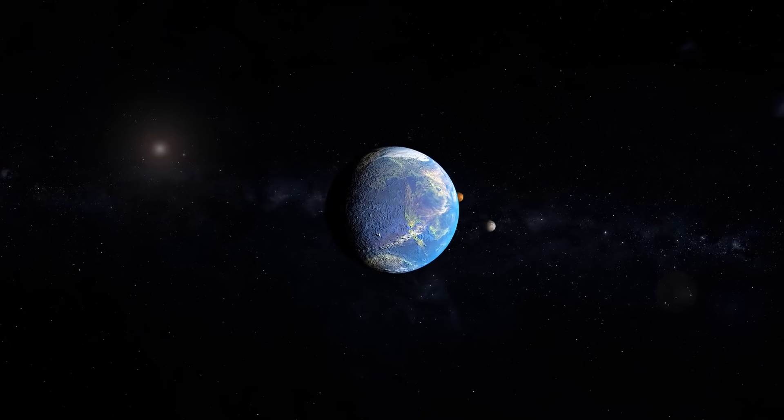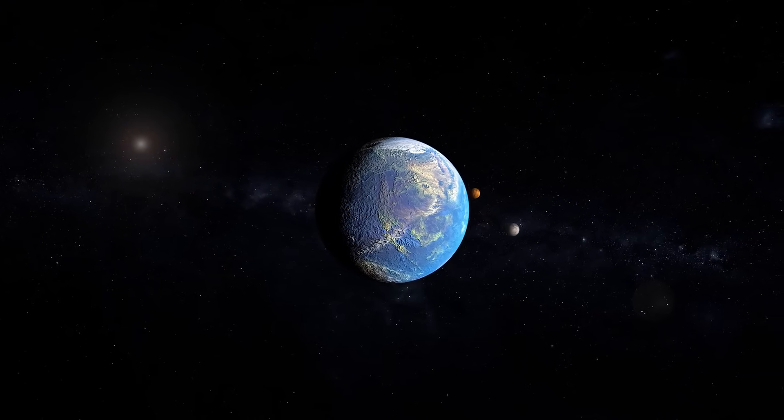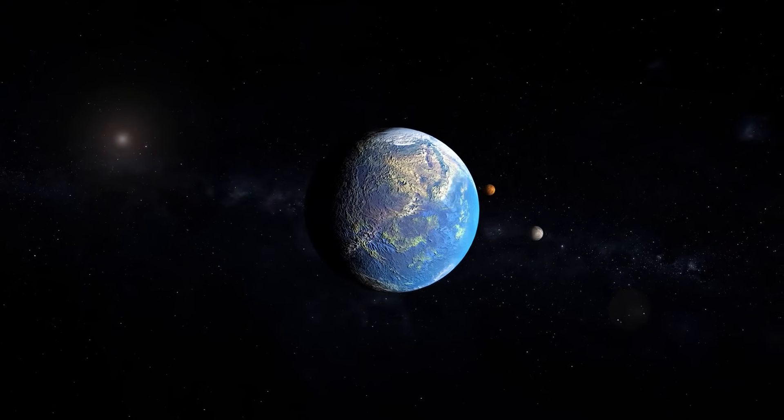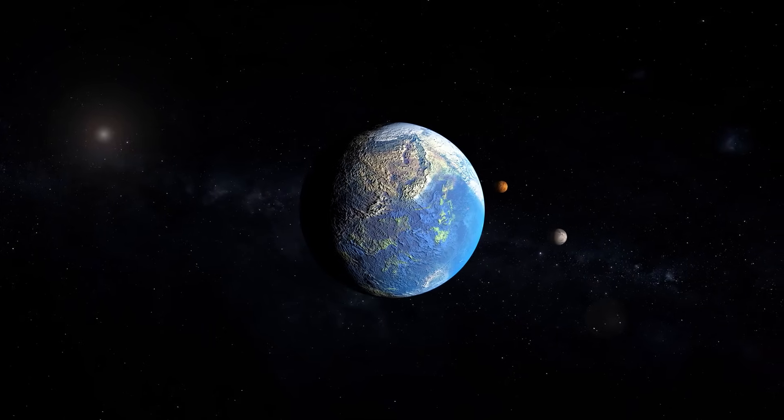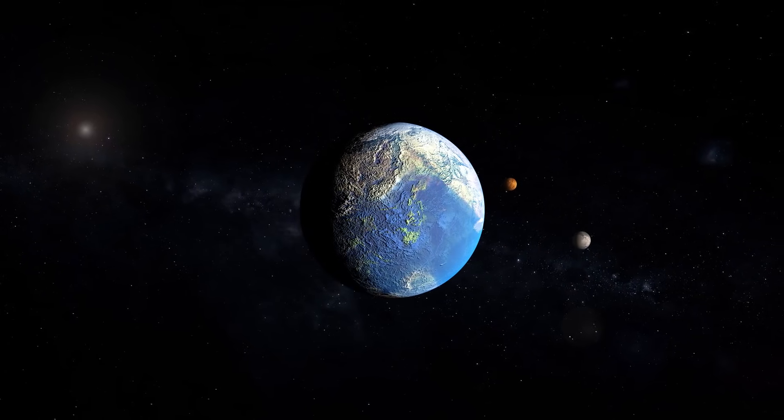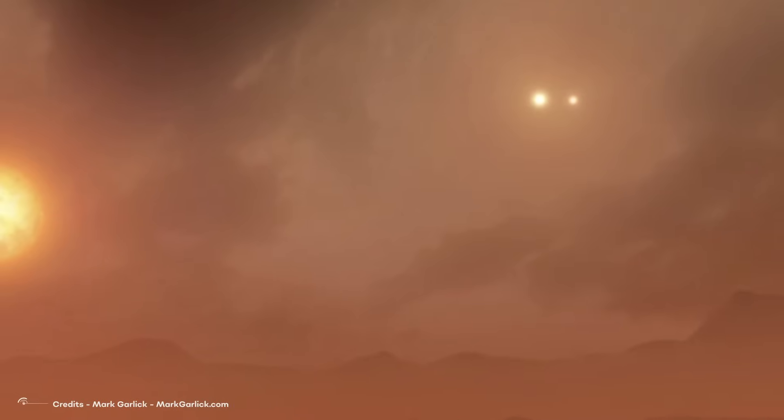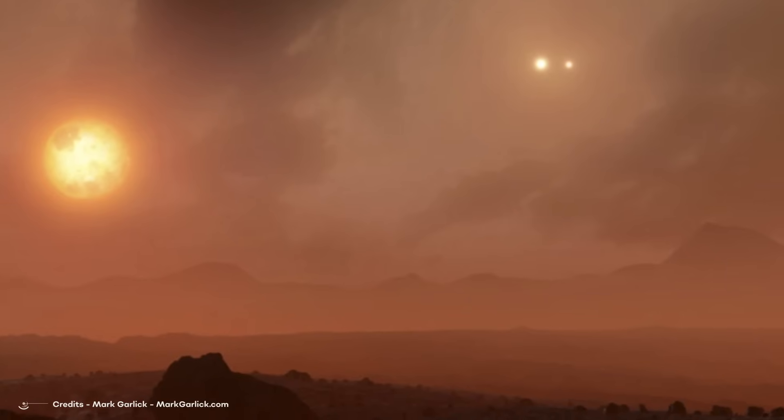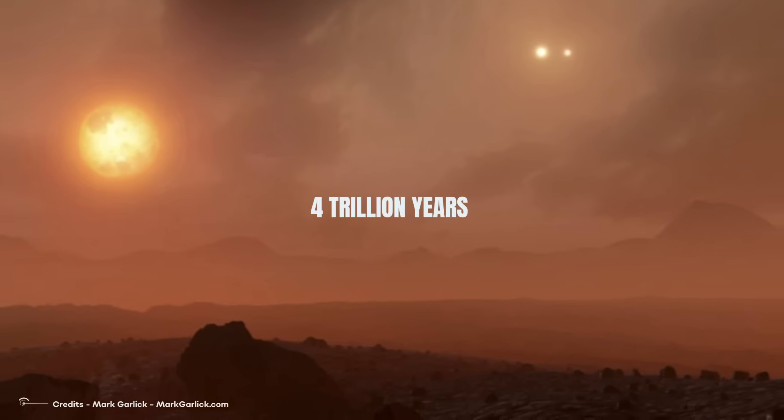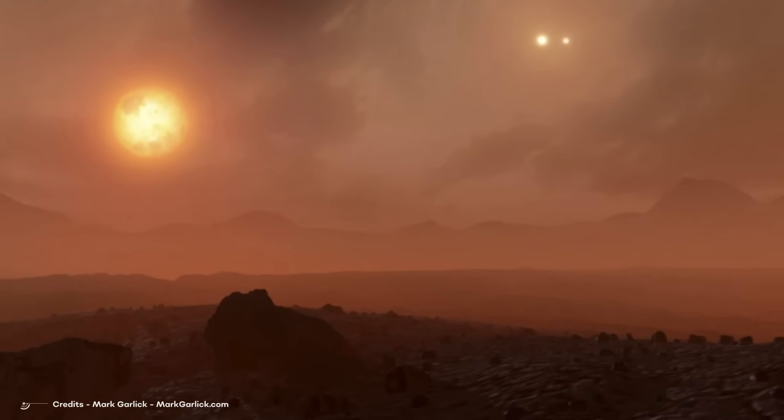We may even find new exoplanets that we do not know about today that are much more conducive to life, especially in Kentaurus and Toliman, two stars that look very similar to the Sun. Both Toliman and Kentaurus will die even before the Sun. Still, Proxima Centauri will continue on the same branch of stellar evolution for another 4 trillion years, 300 times the current age of the universe.